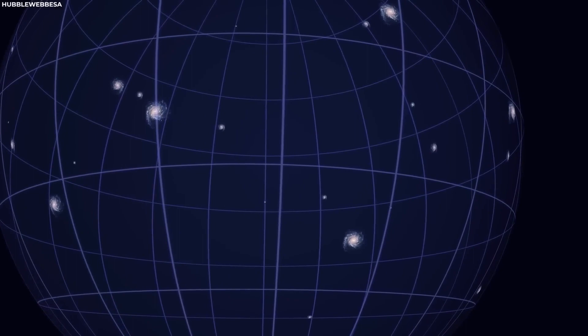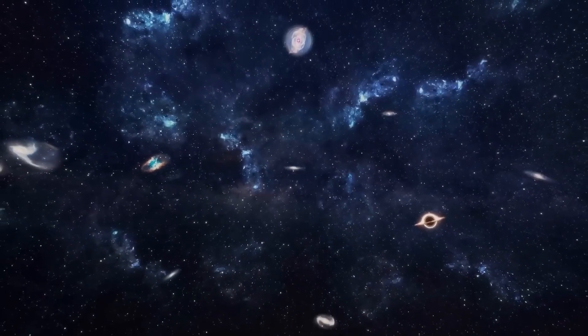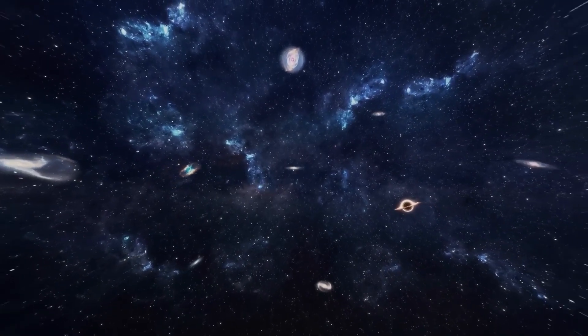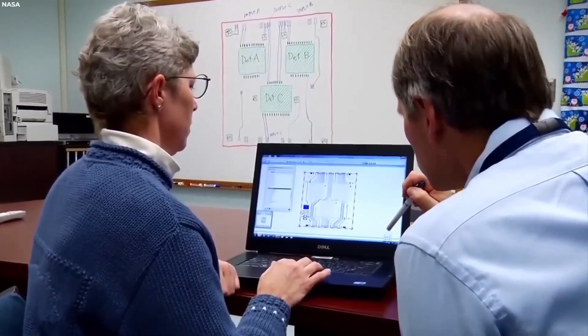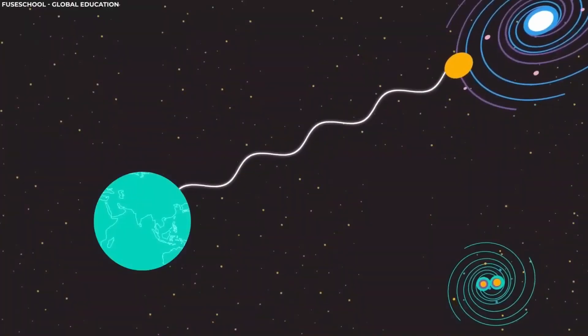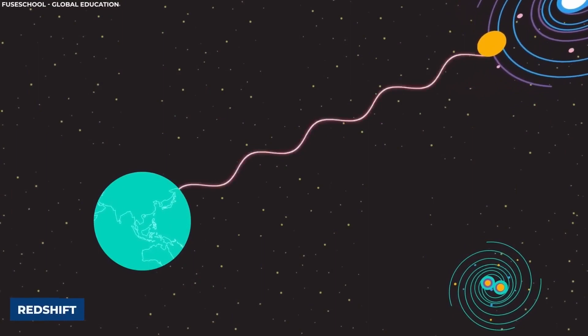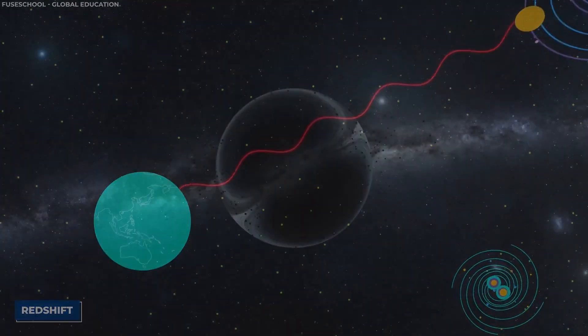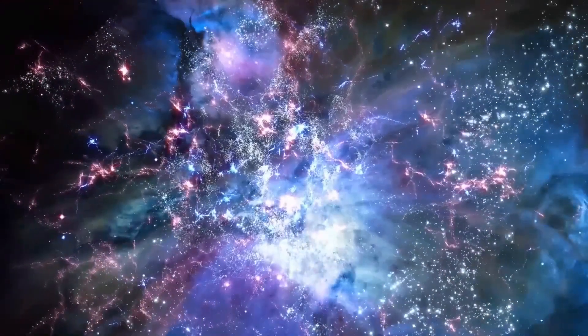Now, imagine the universe as a giant balloon with dots representing galaxies. When you inflate the balloon, the dots move apart. That's exactly how our universe works. It's constantly expanding, causing galaxies to drift away from each other. This expansion isn't just making distances greater, but it's also stretching the light traveling through space, causing a phenomenon known as redshift.